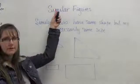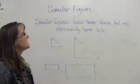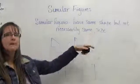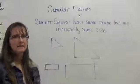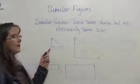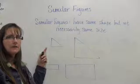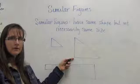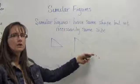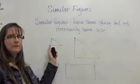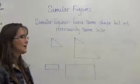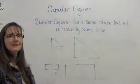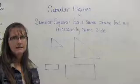Today we're talking about similar figures. What you need to know about similar figures is that they have the same shape, but they don't necessarily have the same size. Here I have a right triangle that is this size, and the same right triangle over here that I have enlarged. These are similar figures because they are the same shape, just not the same size. Two rectangles — same shape, not necessarily the same size.